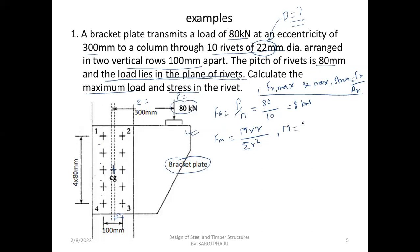What is M? M equals P multiplied by E. P is 30 kN, and E is 300 mm — the distance from the line of action of the load to the joint CG, measured as a perpendicular distance. So M equals 24,000 kN·mm. R is the root of x squared plus y squared.